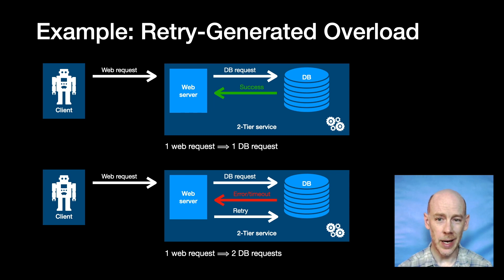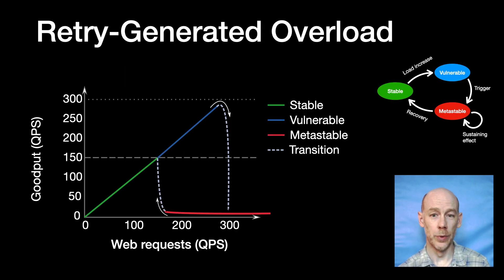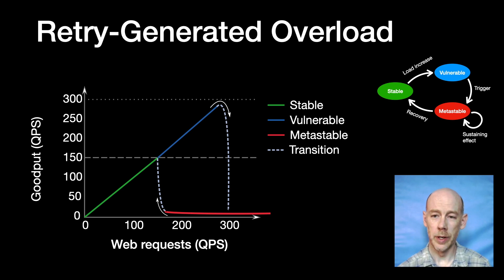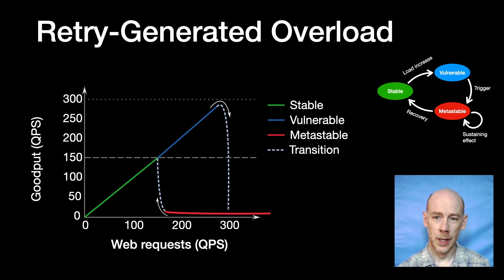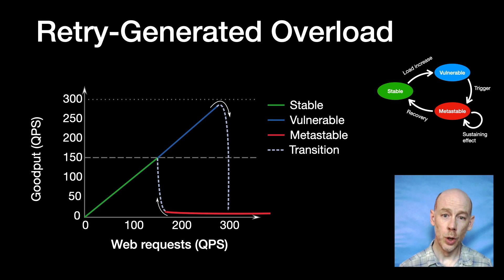It's well known that this kind of naive retry leads to a death spiral under heavy load, so let's fit that into our three-state metastable failure model. Let's say the database maxes out at 300 queries per second. The X-axis of the chart is the offered load — web requests coming in from the client — and the Y-axis is the goodput, the number of successful responses. When the load is less than half of the database's max, the overall system is resilient to triggers, because even if retries double the load on the database, we still have enough capacity. Good put continues to rise and we can get close to 300 requests per second.